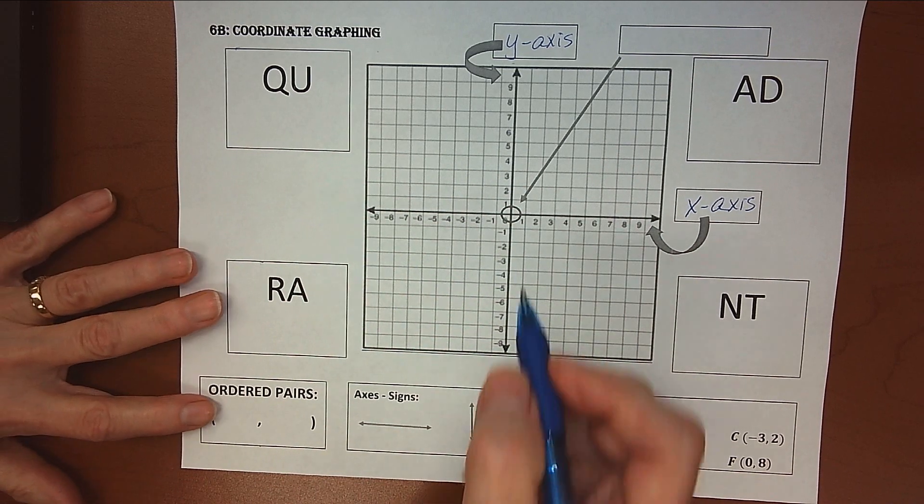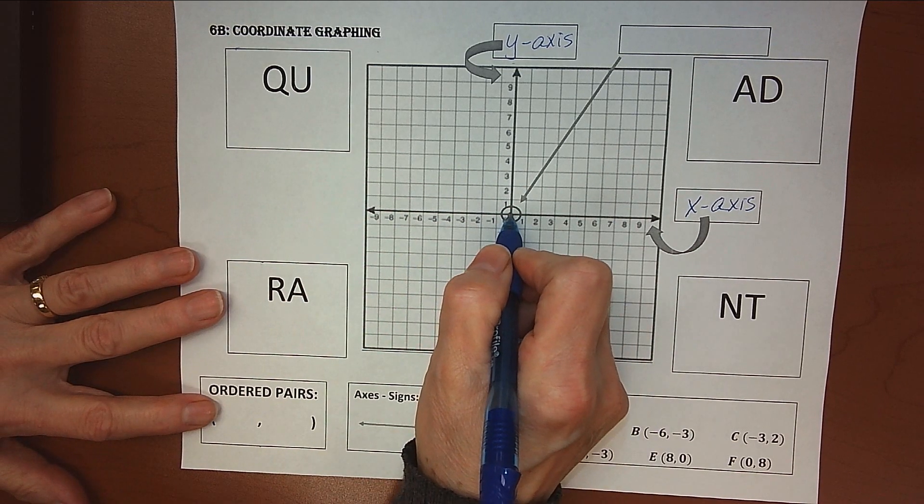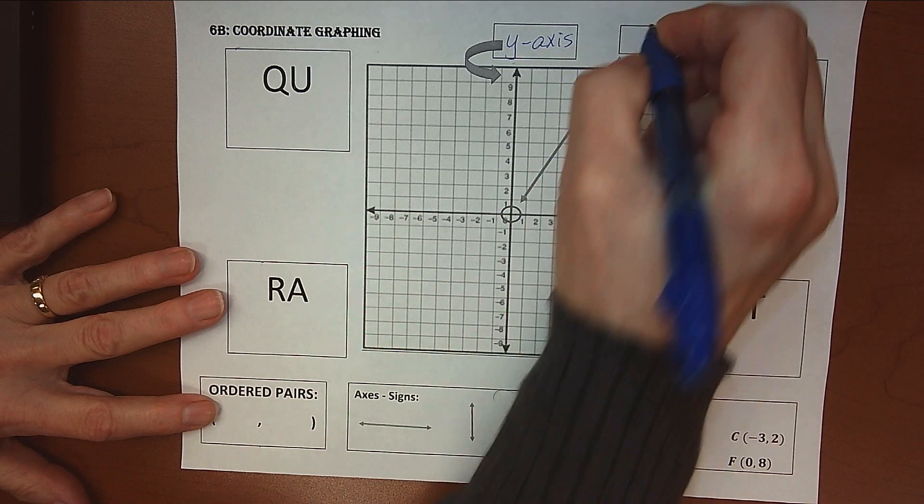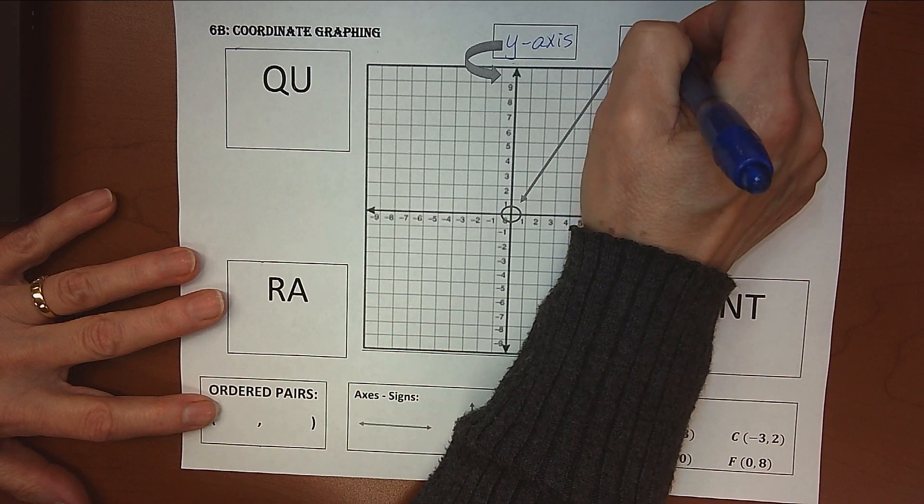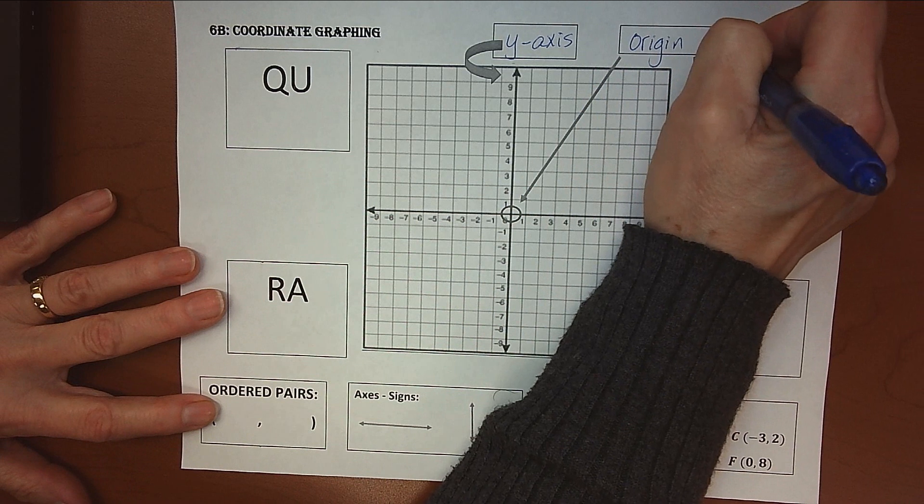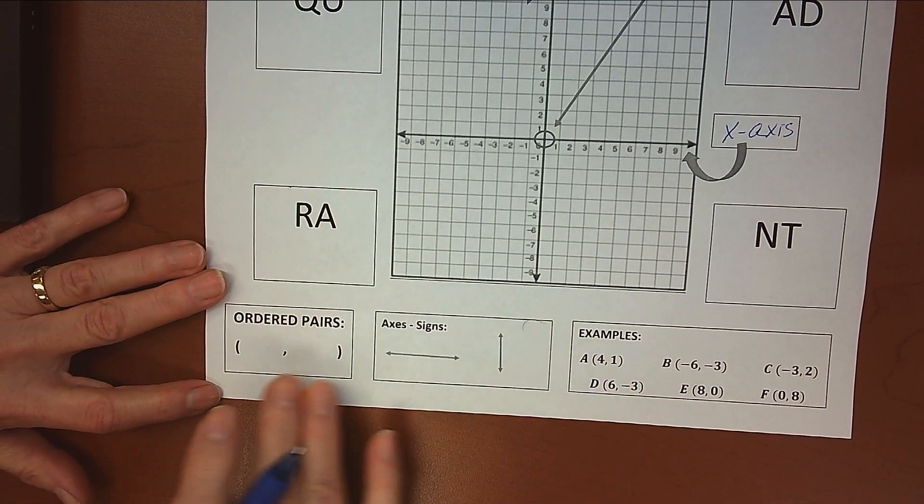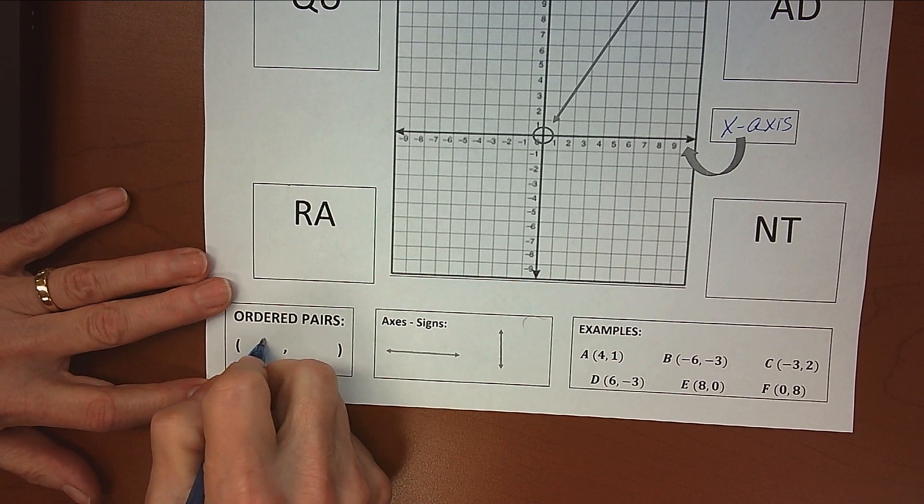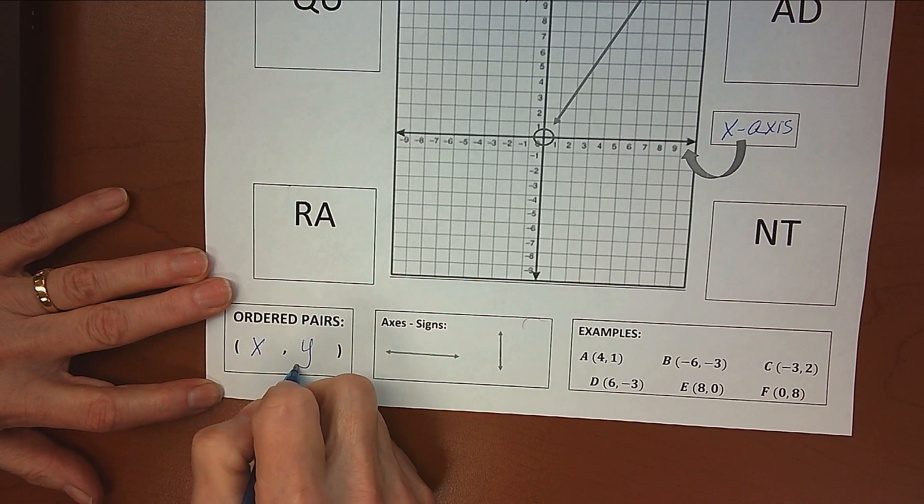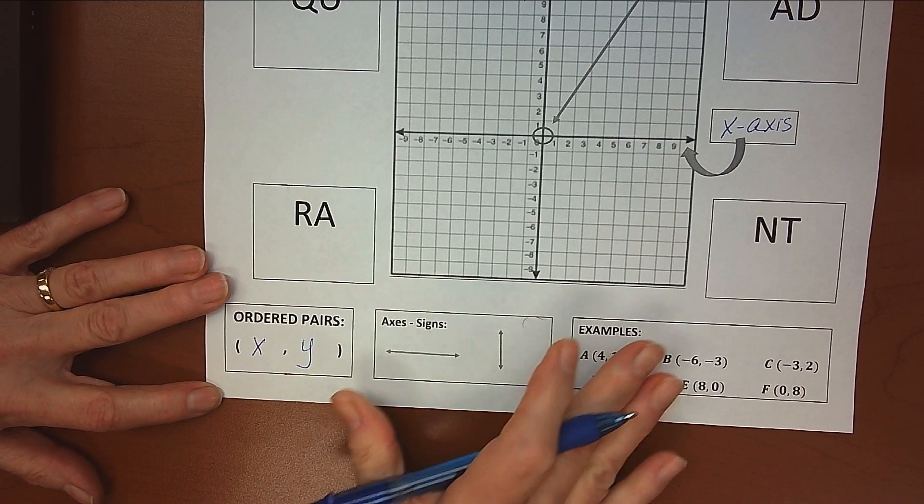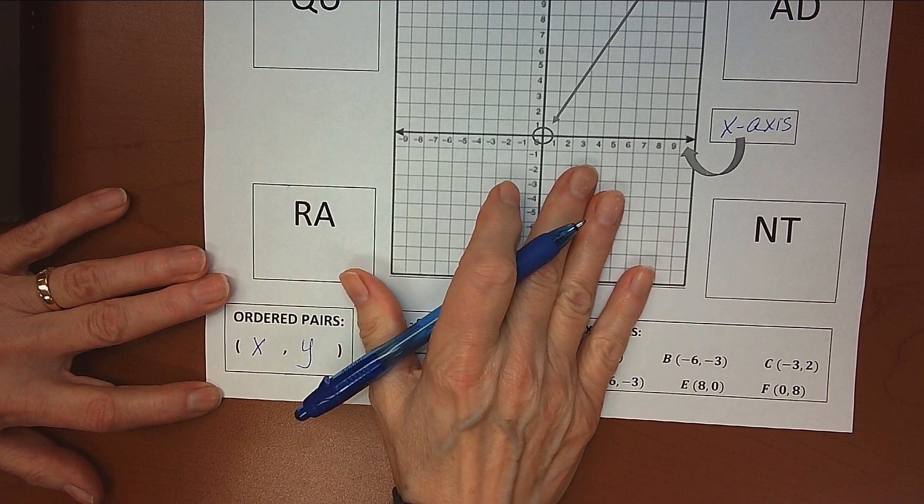And we know that this point, right where they intersect, we call that the origin. And that gets the ordered pair zero, zero. So, just a reminder that ordered pairs always list the x first and the y second, and they describe a location on this coordinate grid.